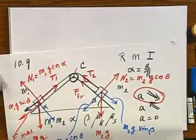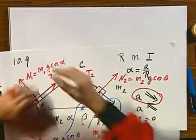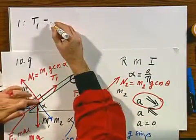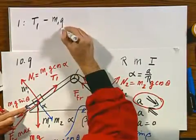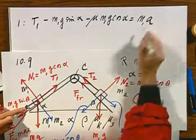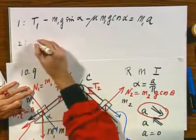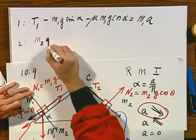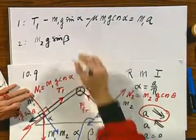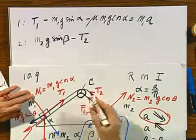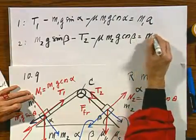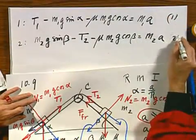So now we are ready to set up our differential equations. For object number one, I have T1, which is the positive direction, minus M1 G sine alpha, minus mu times M1 G cosine alpha. That must be M1 times A. For object number two, M2 G sine beta, this is the positive direction. All the other forces are negative. T2 is up, so that's negative. Minus mu times M2 G cosine beta equals M2 times A. This is my equation number one. This is my equation number two.